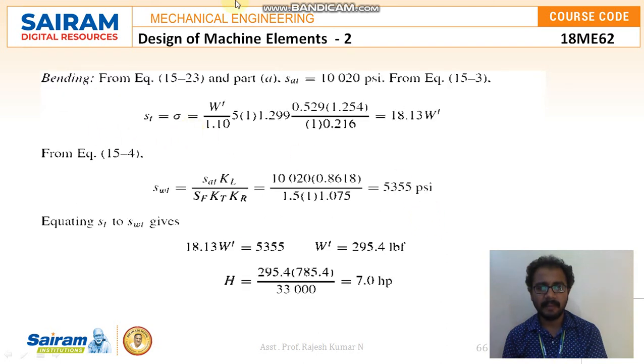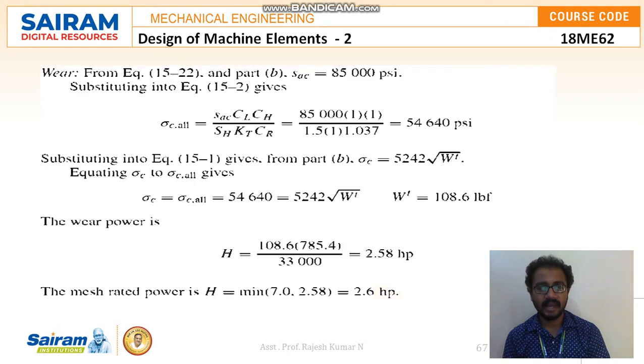And last step is nothing but the bending. So bending I will be finding out SCAT and ST. ST I am getting as 18.13. And SWT I am getting as 5355. And by equating ST and SWT, I will be finding out the unknown W value is 295.4. And from this the power value as usual I am substituting. So I am getting H as 7 HP.